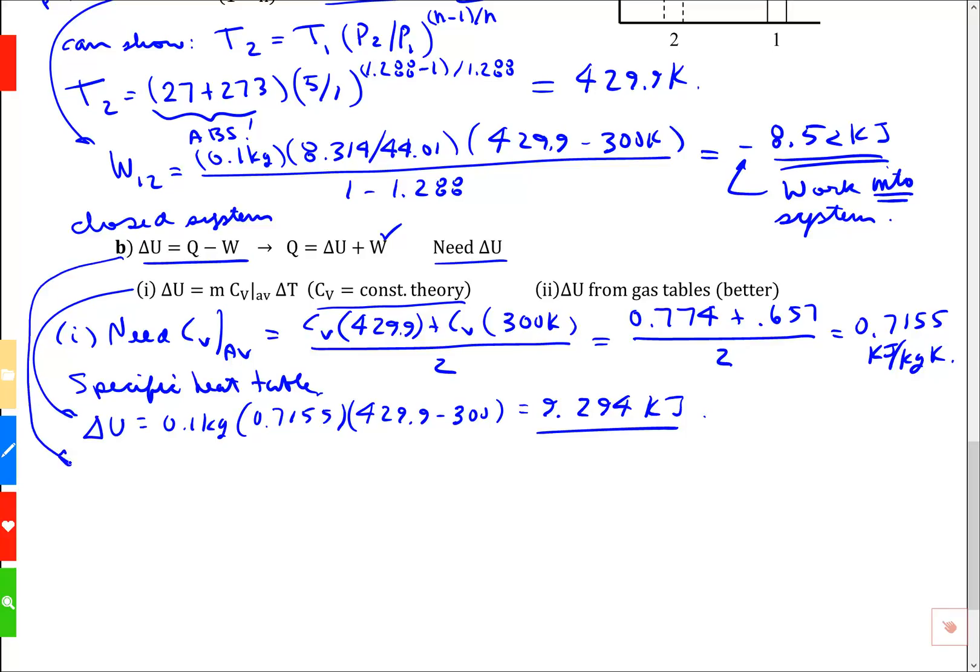And then finally, my heat is going to be delta u plus w. My delta u is this value I just got, 9.294. My work is minus 8.52. The difference here is 0.7743 kilojoules. That's a plus. That would be heat into the gas.